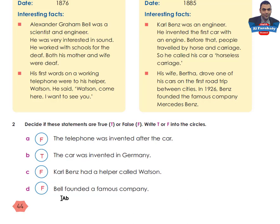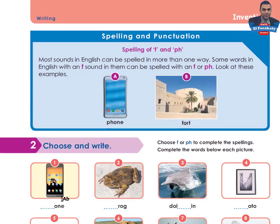Let's go to page 45. Dear students, the writing section in each unit has a spelling and punctuation section. Today it focuses on the spelling of F and PH — they are both pronounced with an F sound. Some words in English with an F sound can be spelled with F or PH.